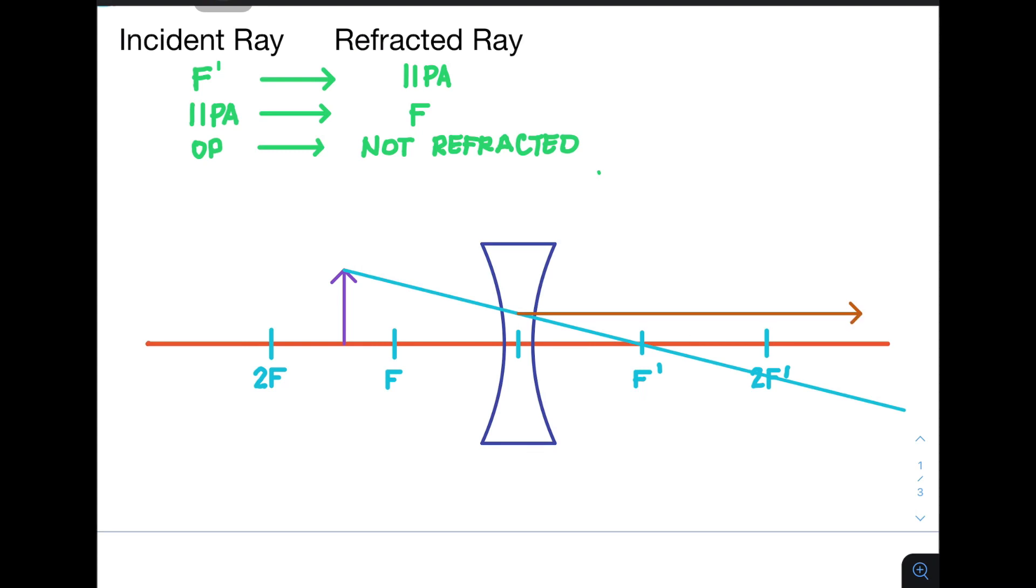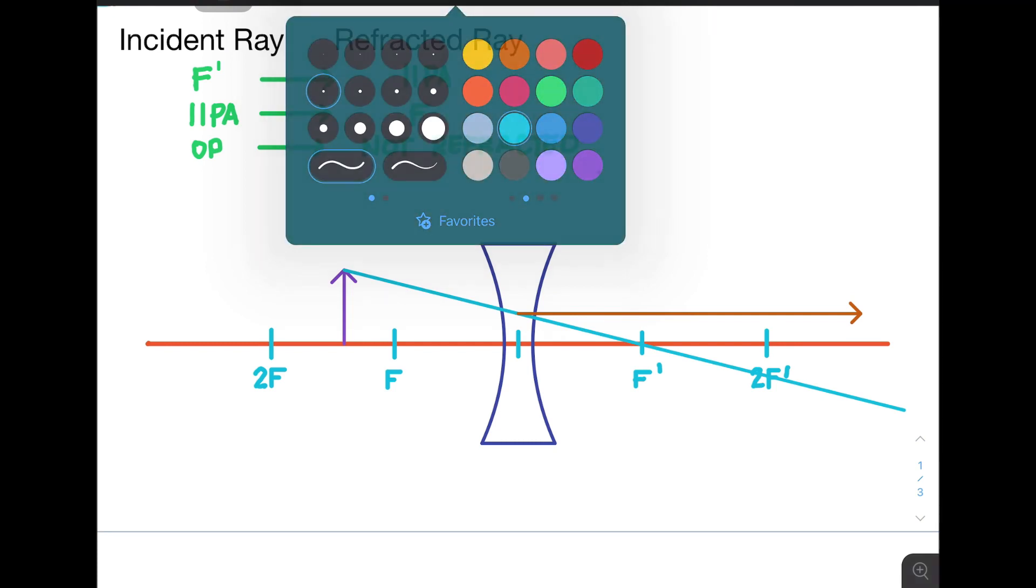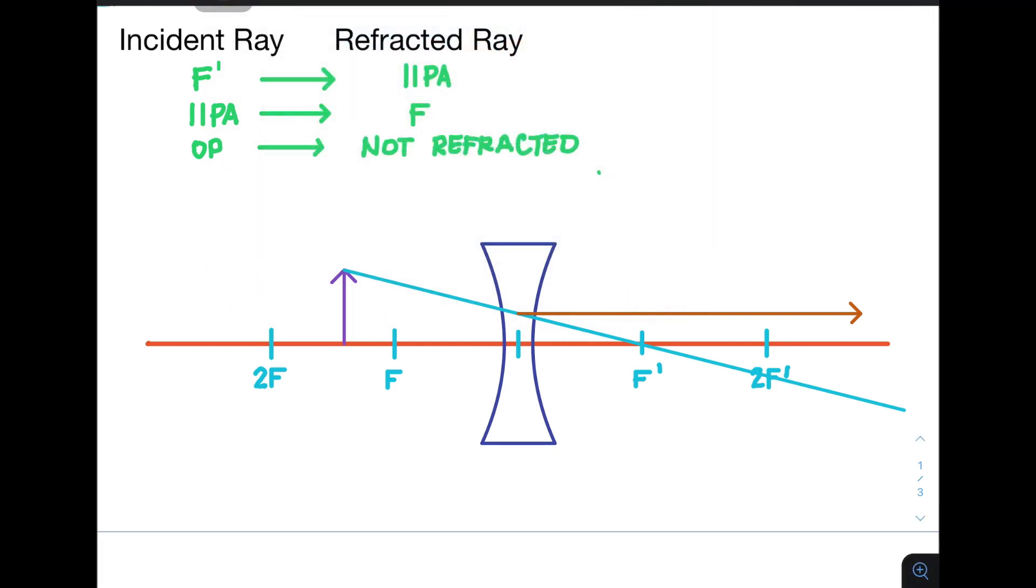Next, it says that we need to draw a line which is parallel with the principal axis, and if we did that, it will then be refracted towards or aligned with the focus instead of the focus prime. So again, a parallel line,